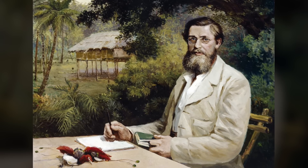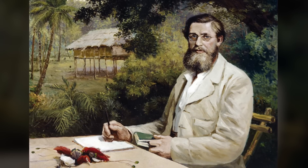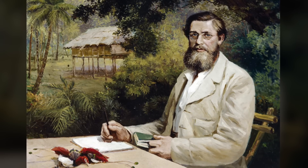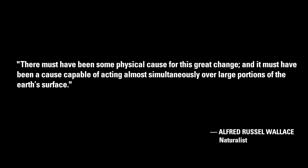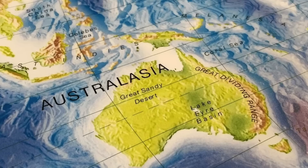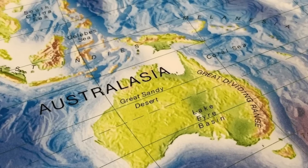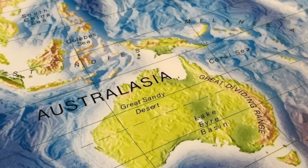Alfred Wallace, when contemplating the world's mass extinctions, concluded: 'There must have been some physical cause for this great change. And it must have been a cause capable of acting almost simultaneously over large portions of the Earth's surface.' Such a continent was Australasia.